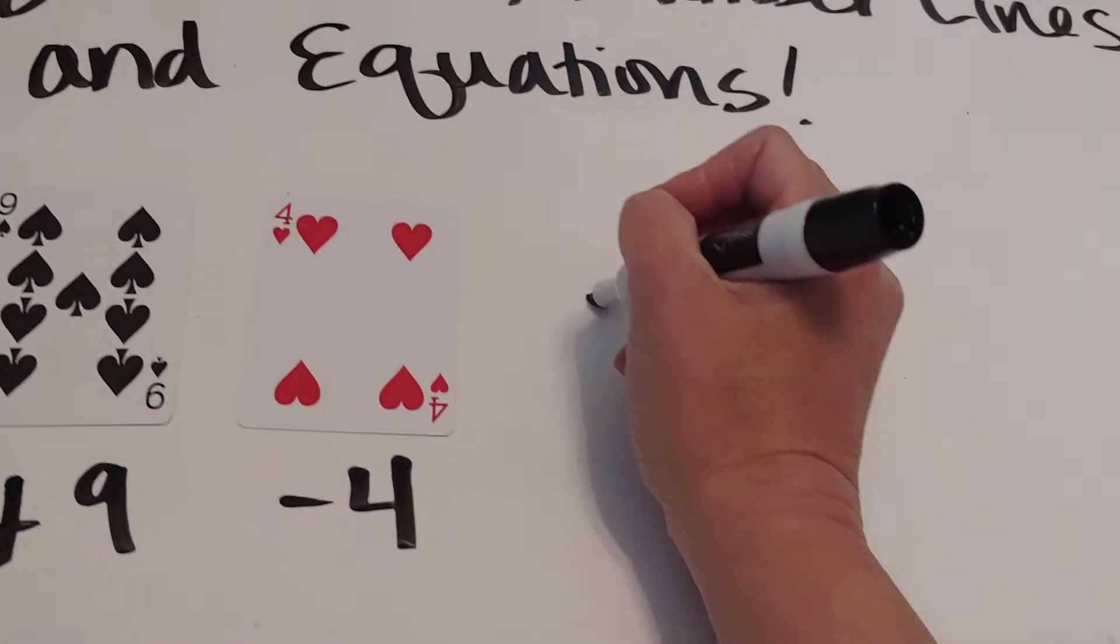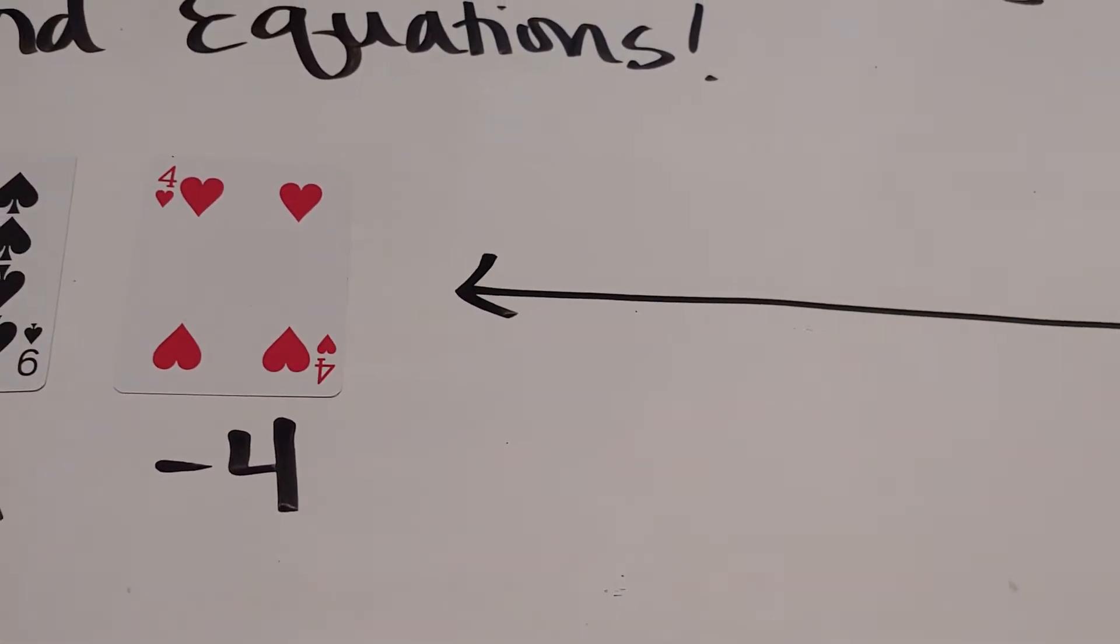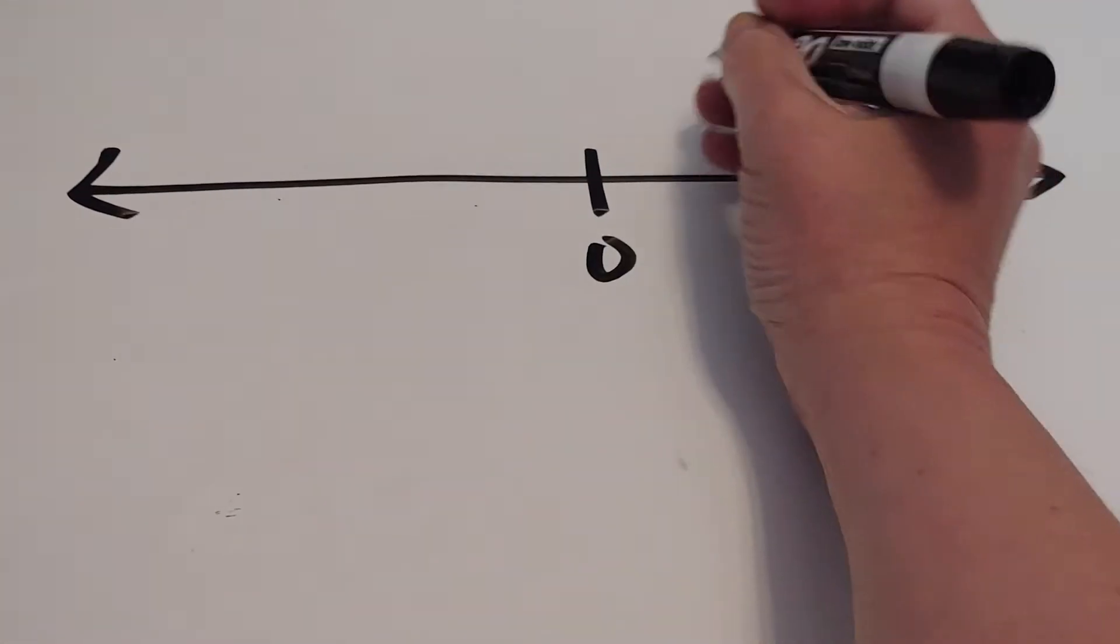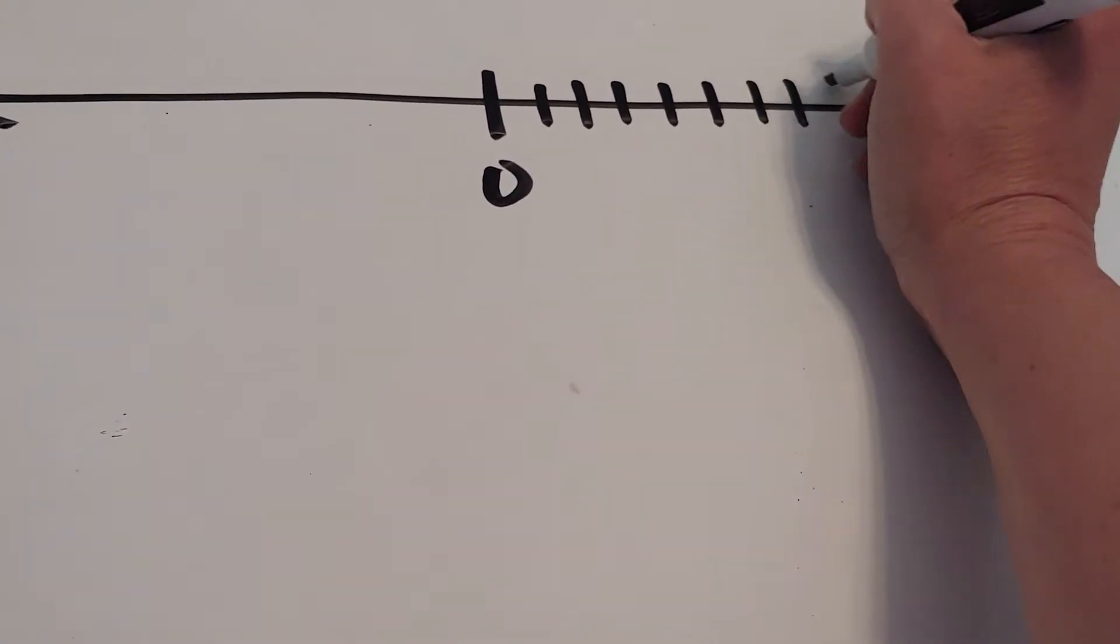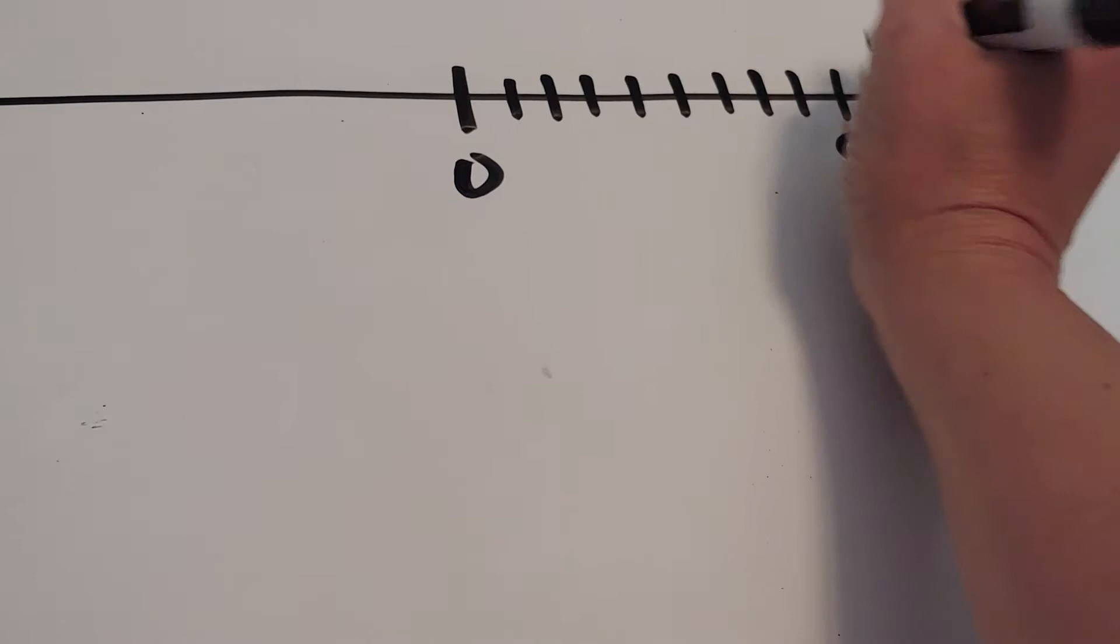First, we'll draw our number line. We'll make little tick marks: one, two, three, four, five, six, seven, eight, nine.